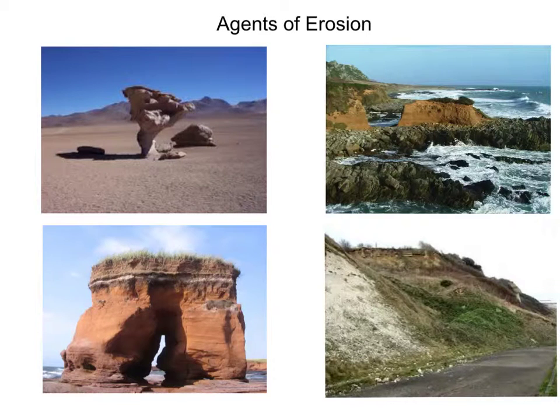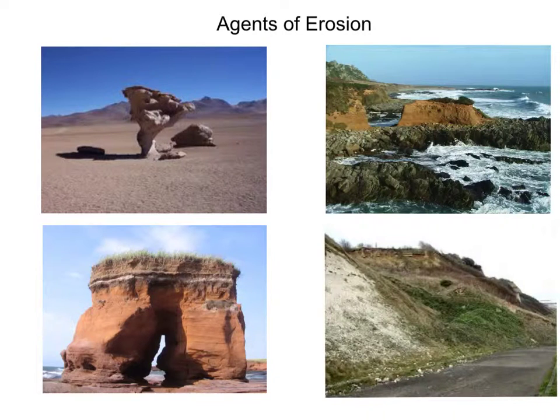Welcome to the Agents of Erosion. There are four Agents of Erosion: Water, Wind, Ice, and Gravity.